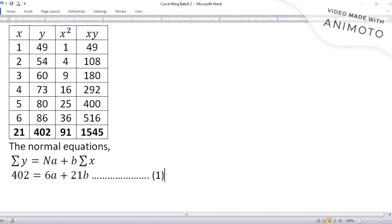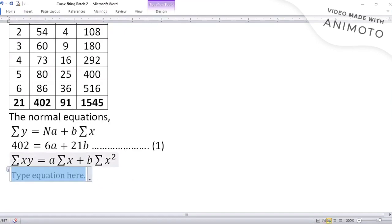One normal equation gives one equation. Second normal equation, which is summation xy equal to a summation of x plus b summation of x square. This is second normal equation, standard. Normal equations we should remember. Summation xy data is 1545, summation x is 21, so it's 21a, summation x square is 91, so 91b. This becomes your equation number two.